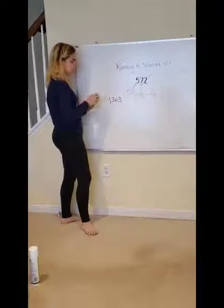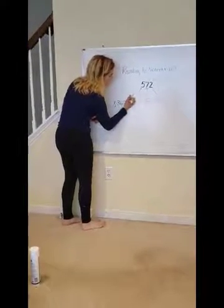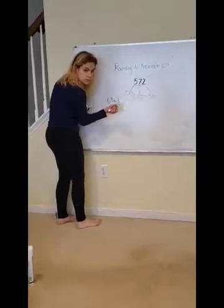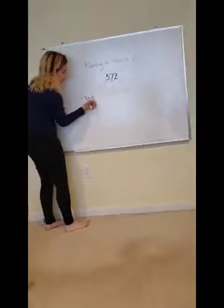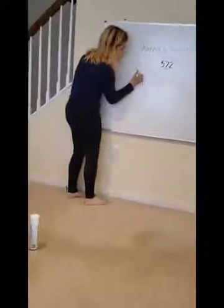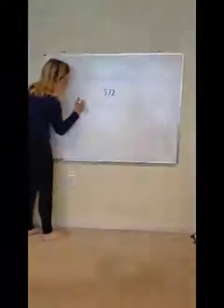So, let's label our spots again. We have ones, tens. Calvin, what comes next? After the tens comes the hundreds. And then what? Then we have the thousands.